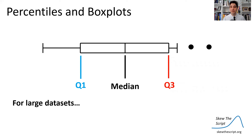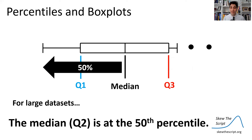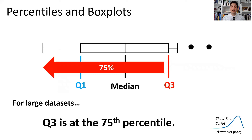Now let's look at percentiles and box plots. For large data sets, quartile one is usually going to be at about the 25th percentile. Quartile two, or the median, is at about the 50th percentile. And quartile three is at the 75th percentile. This makes sense — quartiles, you're thinking quarters: first quarter, second quarter, third quarter.